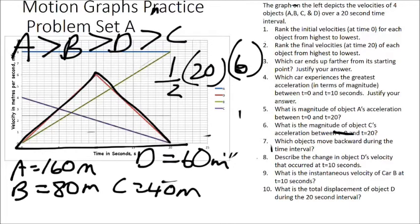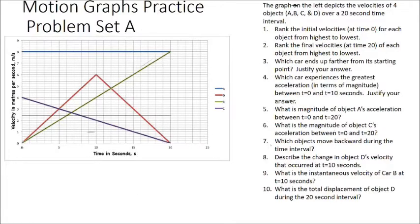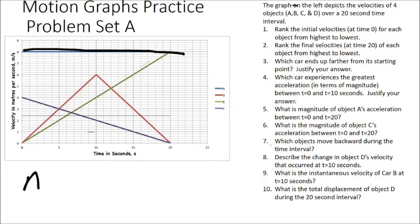Problem four asks us about accelerations. To find acceleration from a velocity-time graph, you need to find the slope of the line. Problem four says which car experiences the greatest acceleration in terms of magnitude between 0 and 10 seconds — direction doesn't matter, we're only looking at size. For line A, we have a straight horizontal line, and the slope of a horizontal line is zero. So object A is not accelerating, but it's still moving at 8 meters per second the entire time.